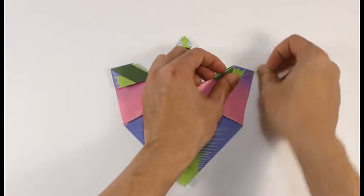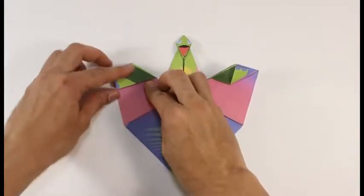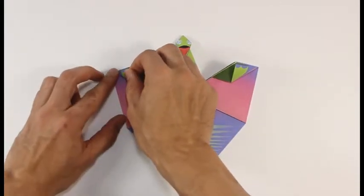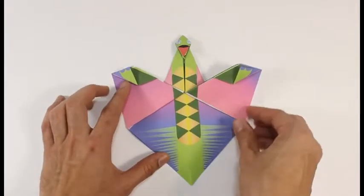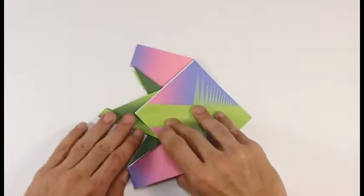Fold the hands forward so the outside edge of the claw lines up with the front edge of the wing. Turn over.